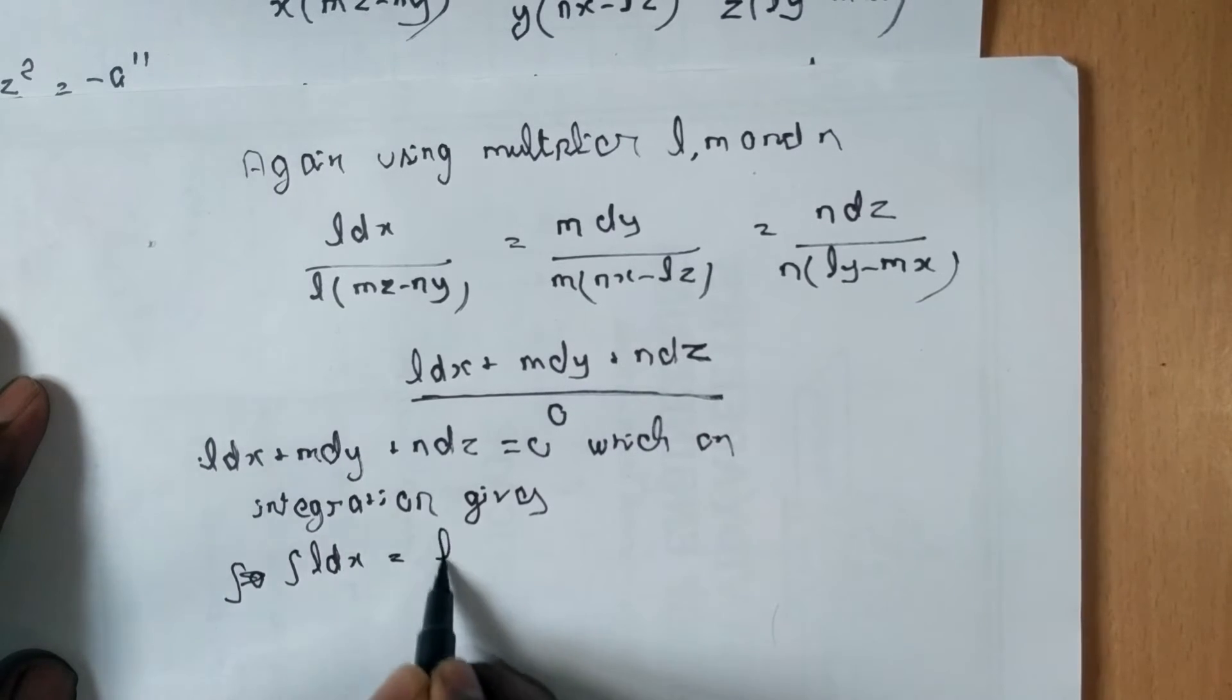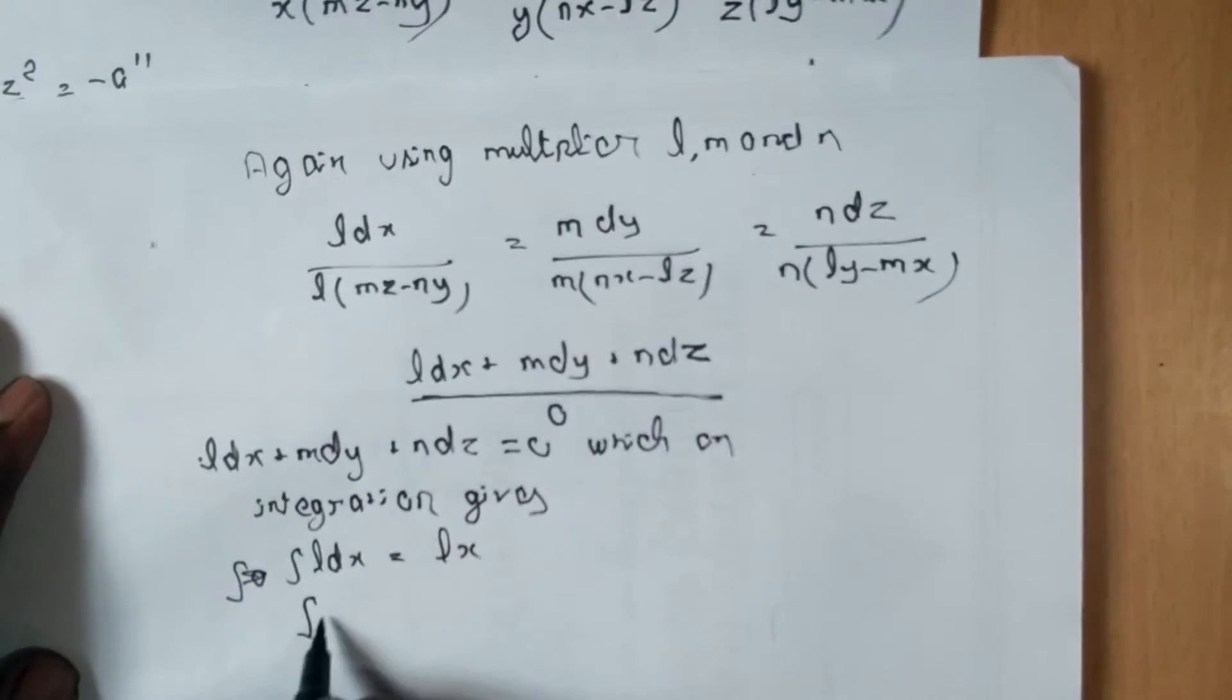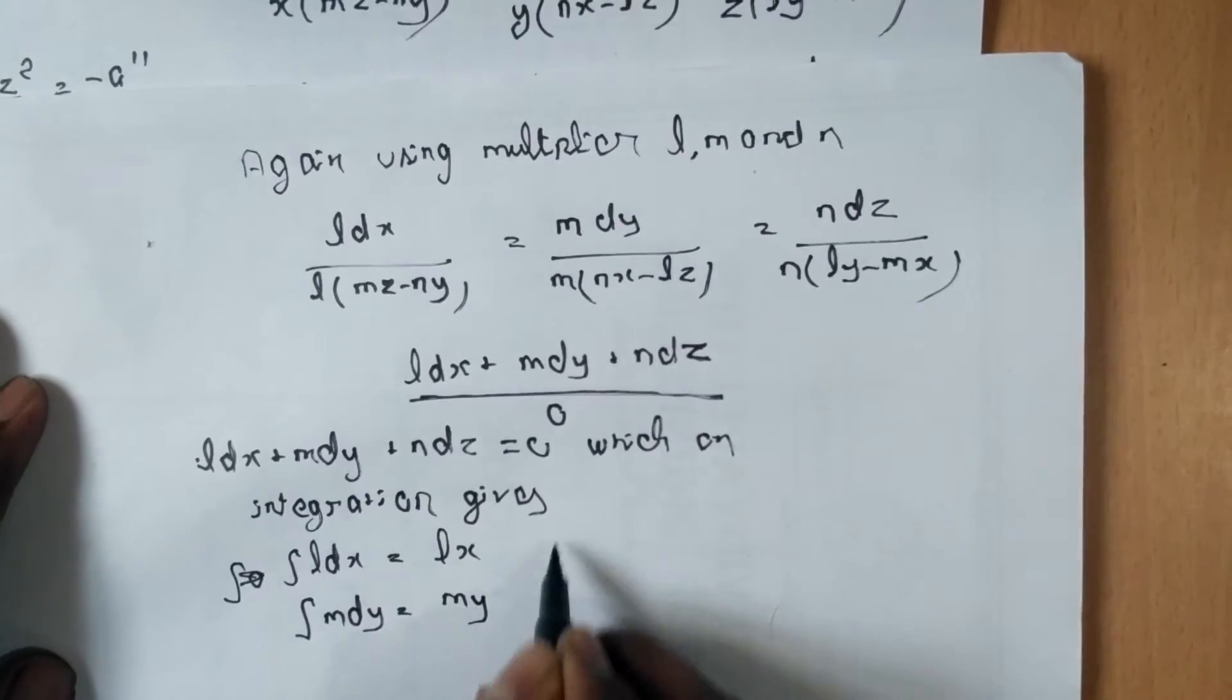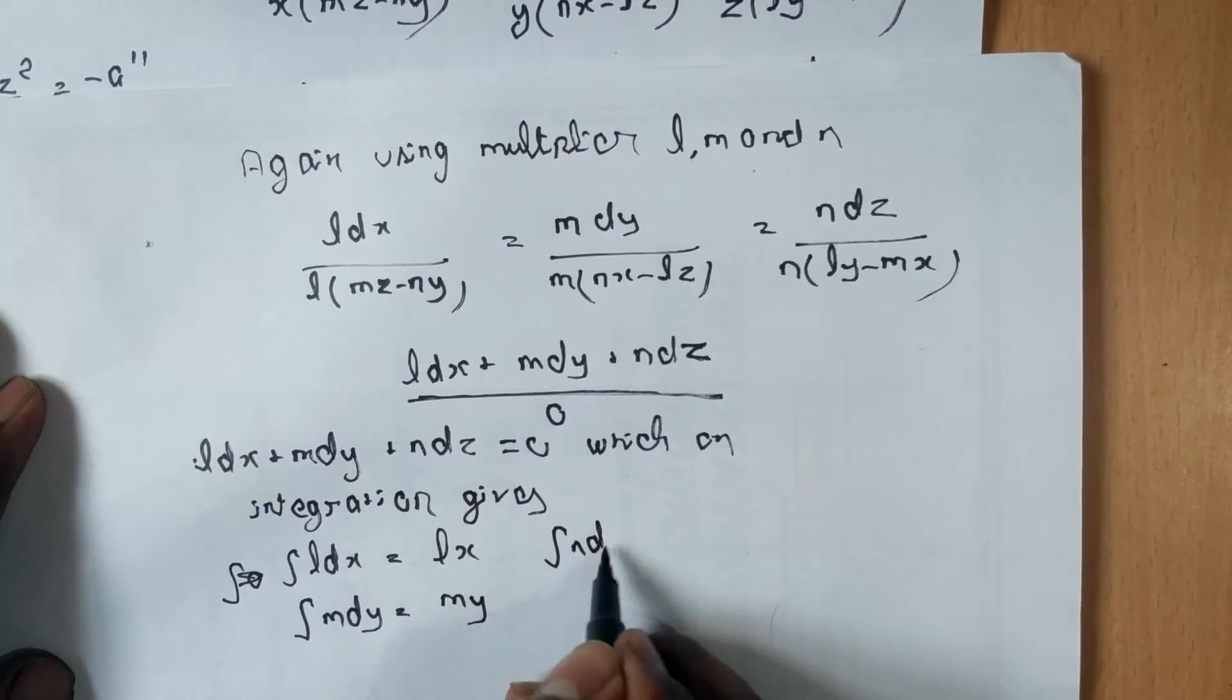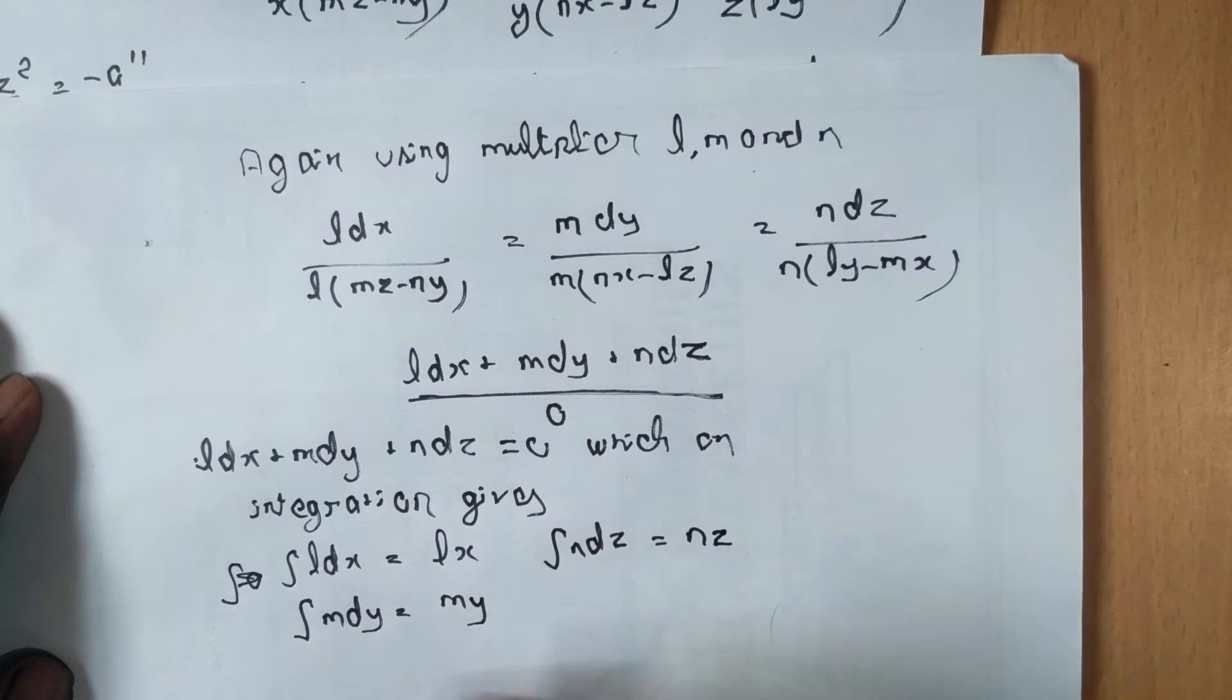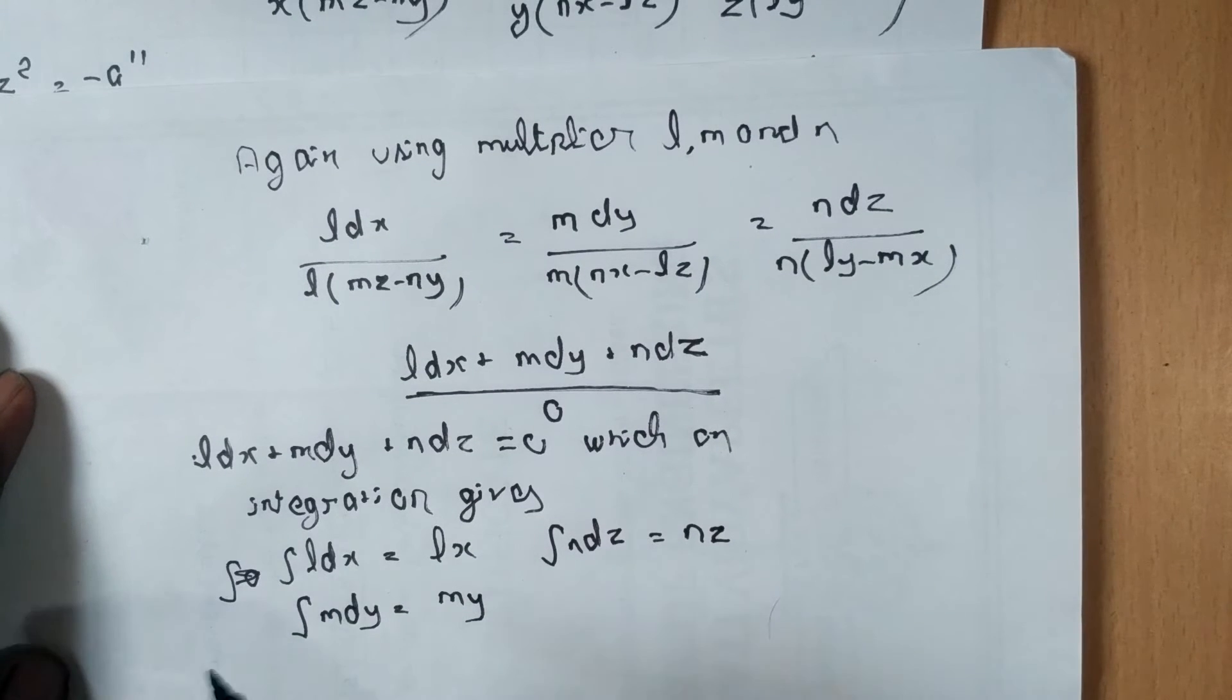Integration of m dy will be my, and integration of n dz is equal to nz. But here it is not a definite integration, it is indefinite integration, so we get a constant in every integration.